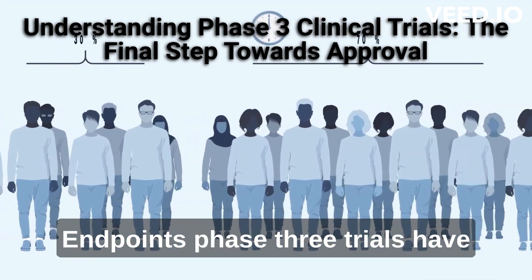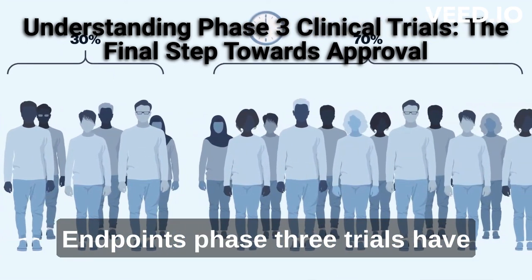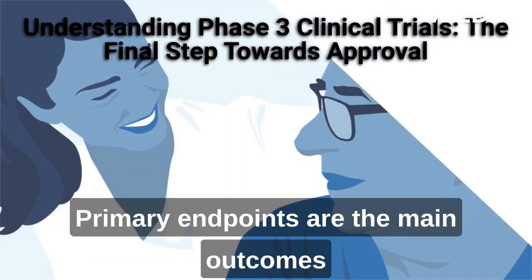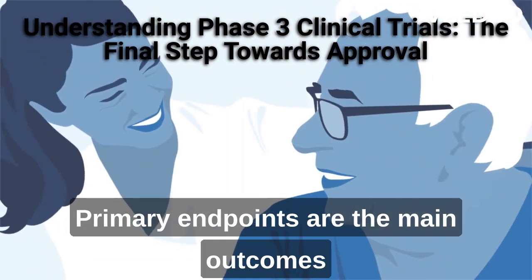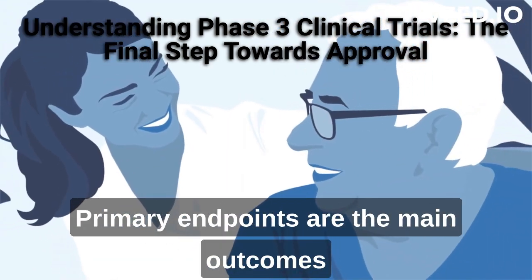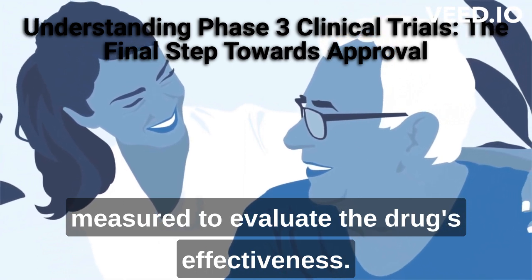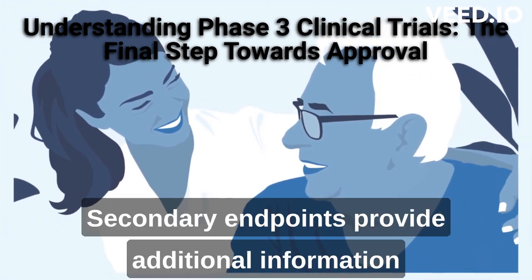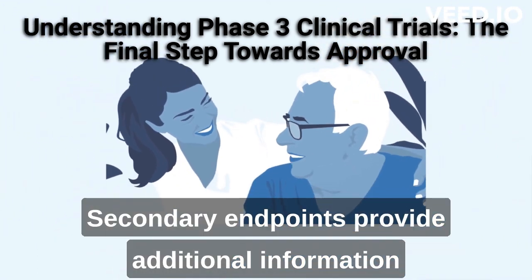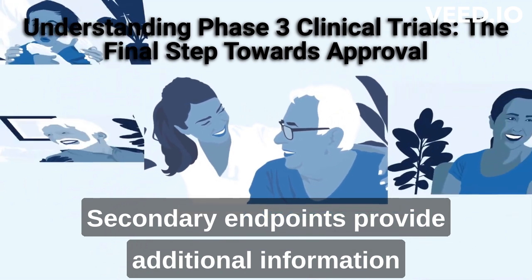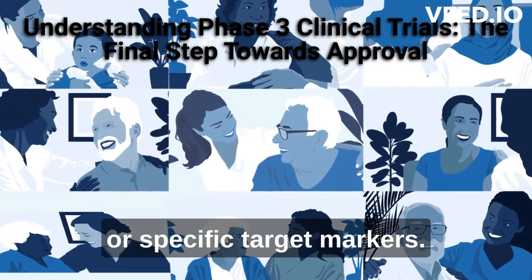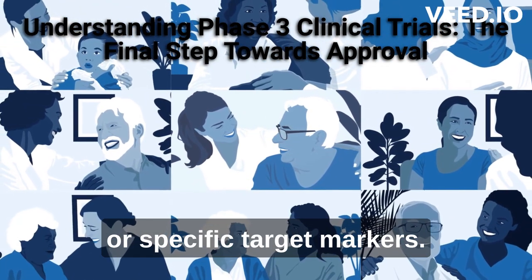Endpoints: Phase 3 trials have primary and secondary endpoints. Primary endpoints are the main outcomes measured to evaluate the drug's effectiveness. Secondary endpoints provide additional information, including quality-of-life improvements or specific target markers.